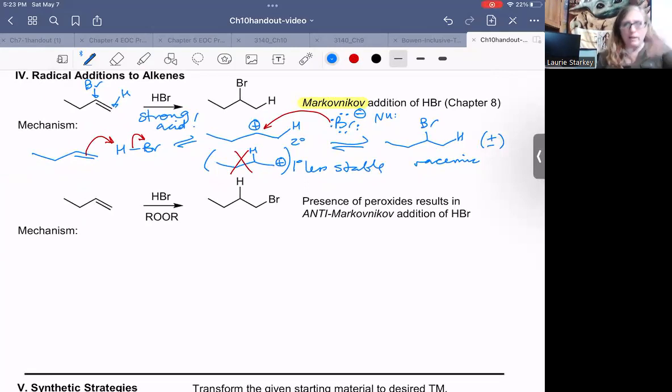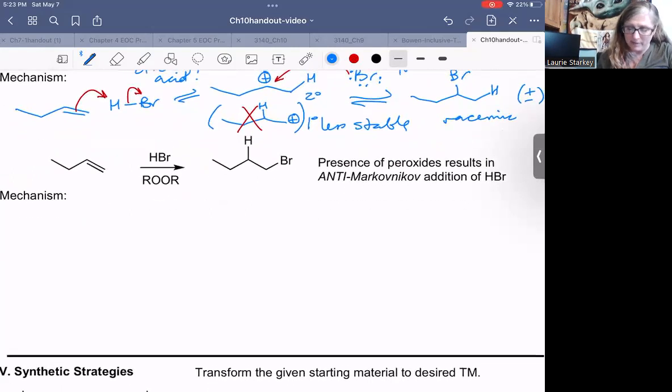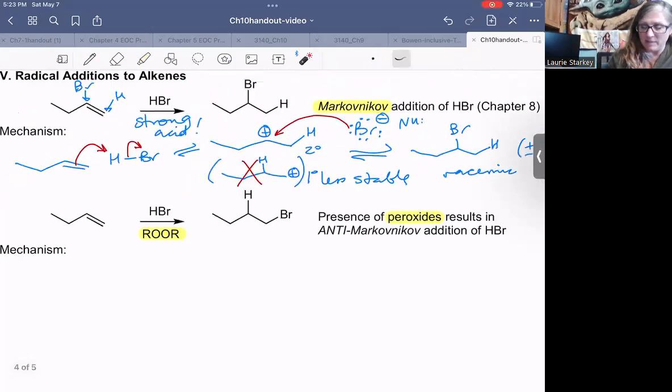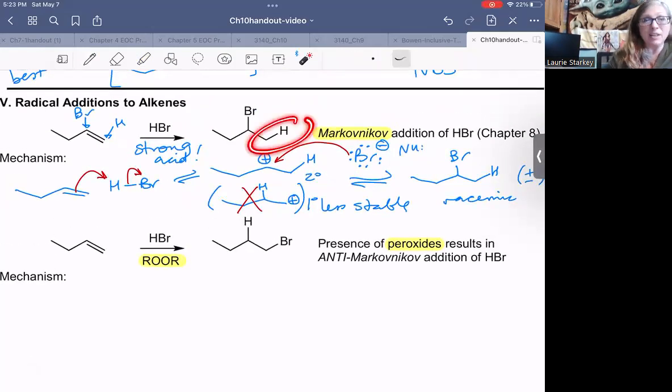Quick little review on what we know about the normal addition of HBr with this carbocation mechanism. Now what happens if instead of just using HBr, we use HBr with peroxides. So ROOR represents a class of compounds described as peroxides when you have two oxygens attached to each other. And all of a sudden we get a different outcome instead of having the hydrogen add to the end carbon, the hydrogen adds to the middle carbon, to the more substituted carbon and the bromine goes where there's more hydrogens. So we described that as anti-Markovnikov, anti-Markovnikov addition, the opposite regiochemistry.